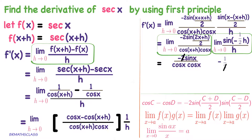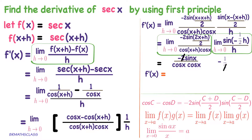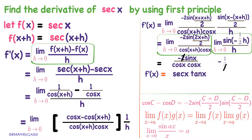Minus minus will become plus. Observe that the 2 in the numerator and denominator cancel. The remaining part is minus 2 sin x divided by cos x into cos x. Now 1 by cos x can be written as sec x, and sin x by cos x is tan x. Therefore, if f of x is sec x, then its derivative is sec x into tan x. From now onwards, we take this as a formula: the derivative of sec x is sec x into tan x. I hope you understand this class.